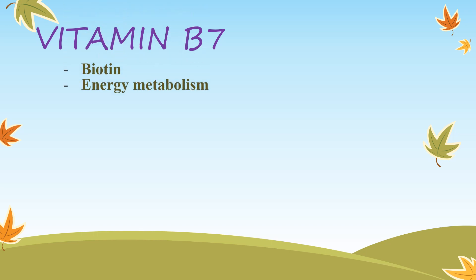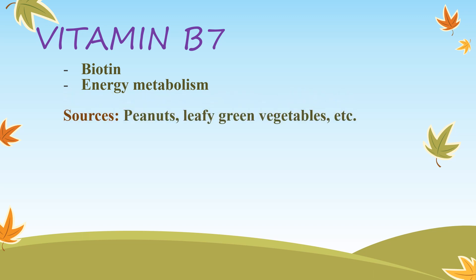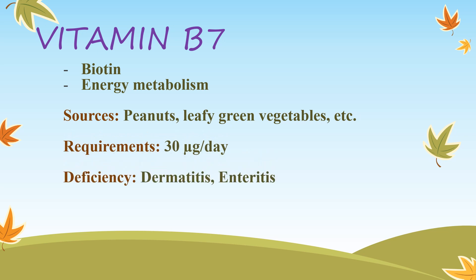B7 — biotin, earlier called vitamin H. It is part of an enzyme needed for energy metabolism. Sources: peanuts, raw egg yolk, liver, and leafy green vegetables. Required daily allowance: 30 micrograms per day. Deficiency causes dermatitis — a common skin irritation — and enteritis, which is inflammation of the small intestine.